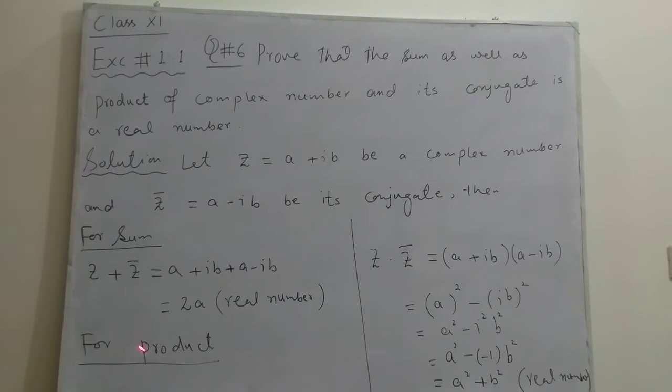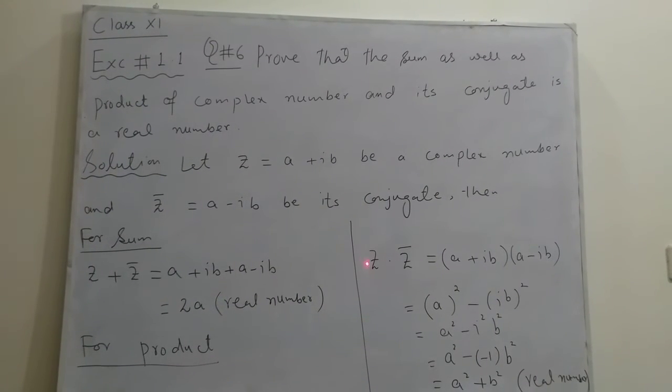Now for product we will multiply z and z bar. Putting value of z and z bar we have a plus iota b into a minus iota b. Using formula a plus b into a minus b which equals a square minus b square, we have a square minus iota b square.